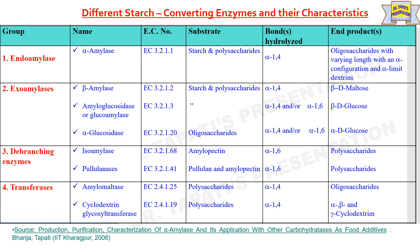Different starch converting enzymes differ from each other in source, nature of substrate, bond specificity, and end product of hydrolysis. An example of an endoamylase is alpha-amylase, whose substrates are starch and polysaccharides. Alpha-amylase hydrolyzes alpha-1,4 glycosidic linkages, producing oligosaccharides of varying length with an alpha configuration and alpha-limit dextrins.